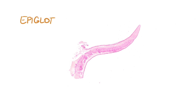Hi, welcome to our channel. This time we will talk about epiglottis. As you know, epiglottis is a structure that projects from the upper rim of the larynx and serves to prevent fluids or swallowed food from entering the respiratory passages.